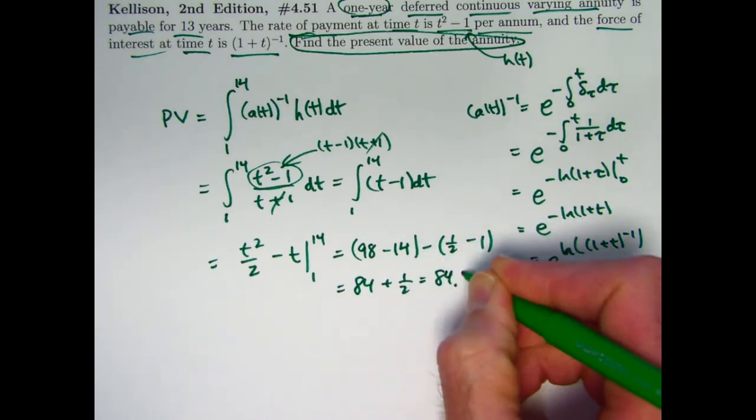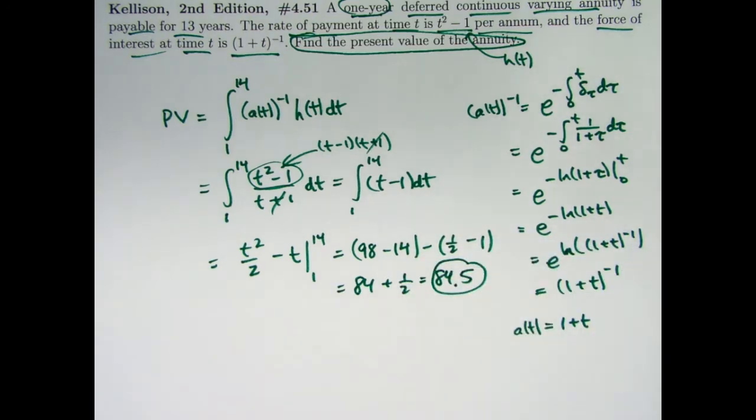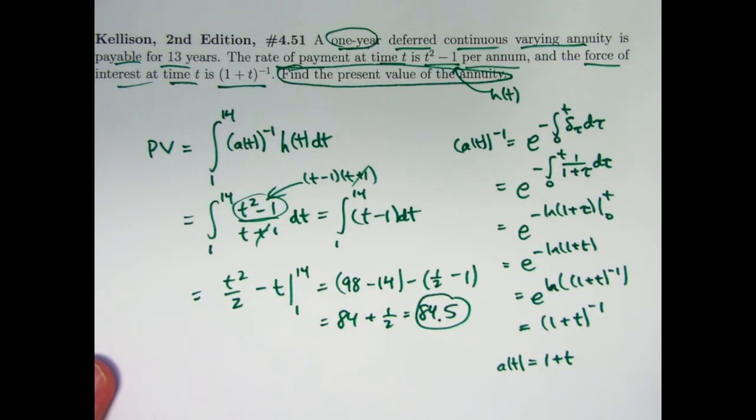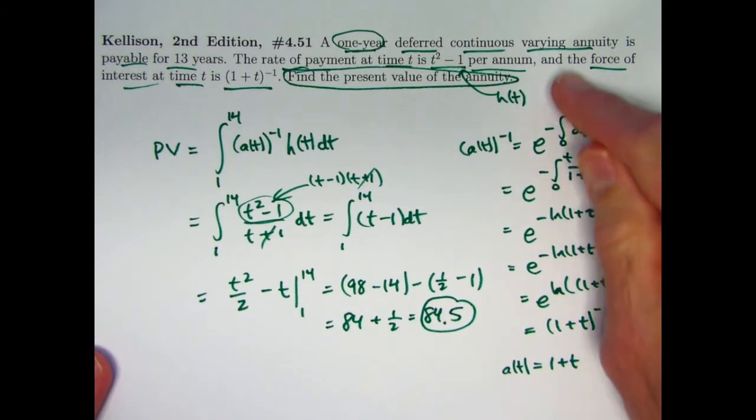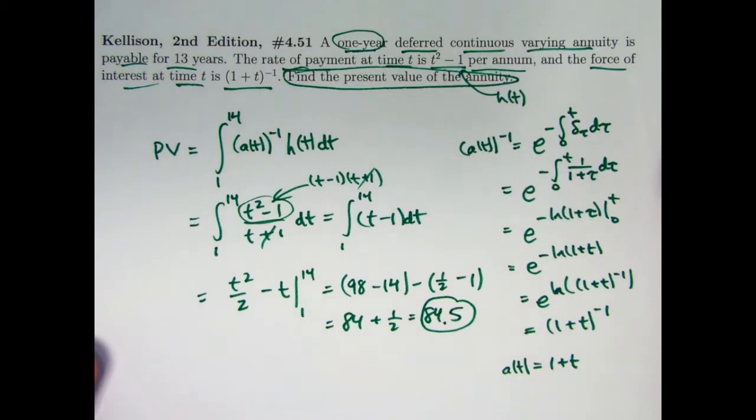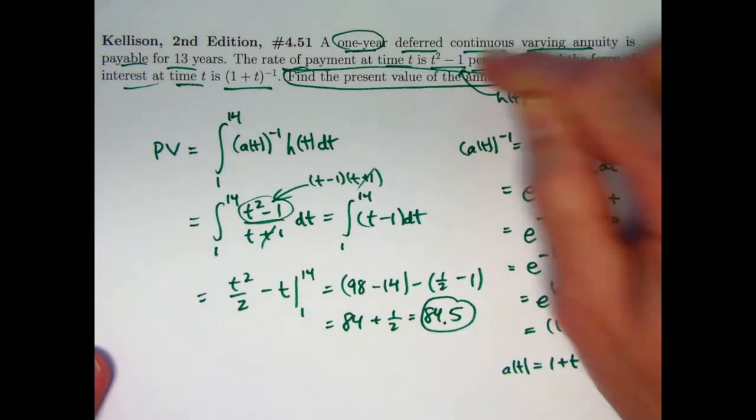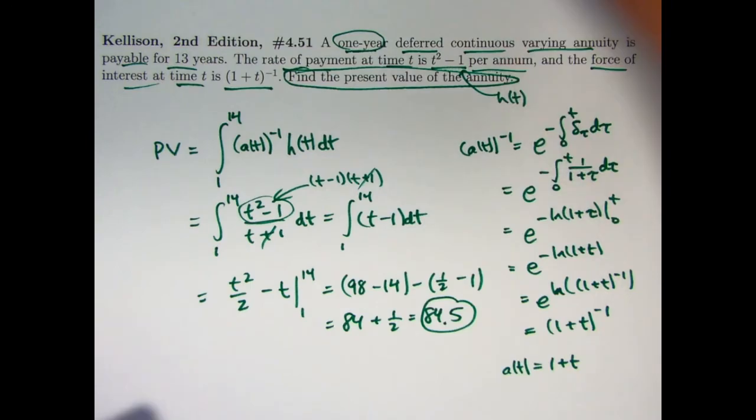So we get 84 plus 1 half. We get 84.5. And that is the correct answer. That is the present value of this one year deferred continuous varying annuity that's payable for 13 years based on this rate of payment and based on this force of interest.